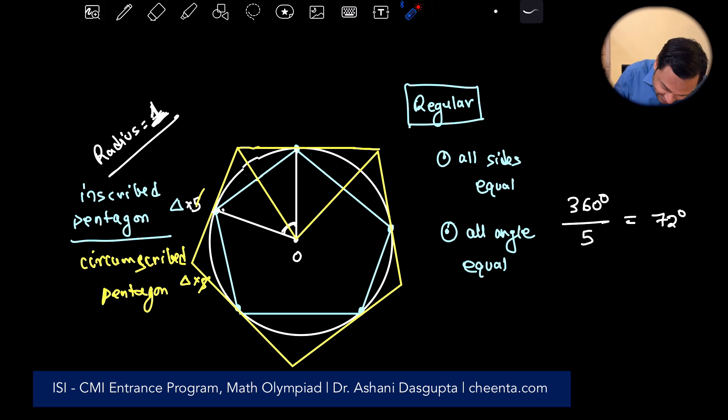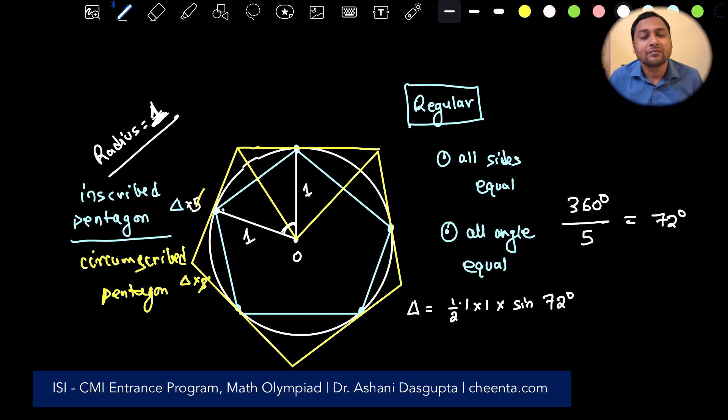So the first one, this little triangle is very easy. This is one. This is one because they are radius of the circle. So we use sine rule. So the area of the triangle, small triangle, is half times one times one times sine 72 degree. That is the sine rule for computing area of a triangle: half of product of two sides times the sine of the angle between them.